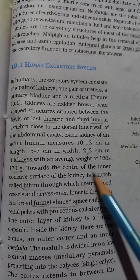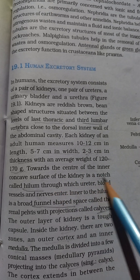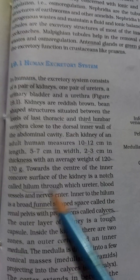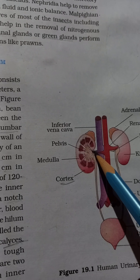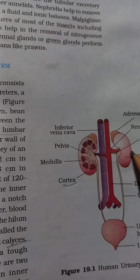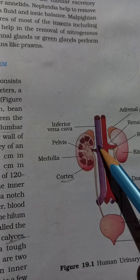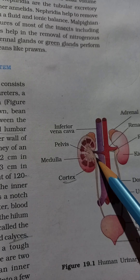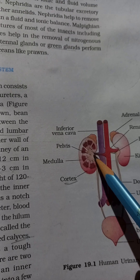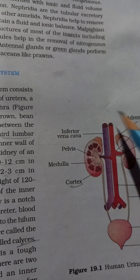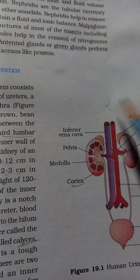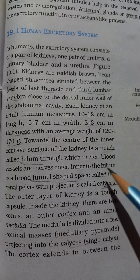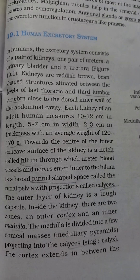Towards the center of the inner concave surface of the kidney there is a notch — a kind of pinch or dip — called the hilum. The hilum is the place where arteries and veins enter the kidney, and where the ureter exits. This question about the hilum has been asked quite often.